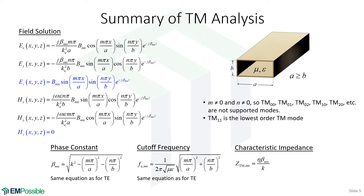Since M and N cannot be zero for TM modes, TM00, TM01, TM02, and TM10 are not guided modes. The TM11 mode is therefore the lowest order TM mode, meaning it has the lowest cutoff frequency among all TM modes.